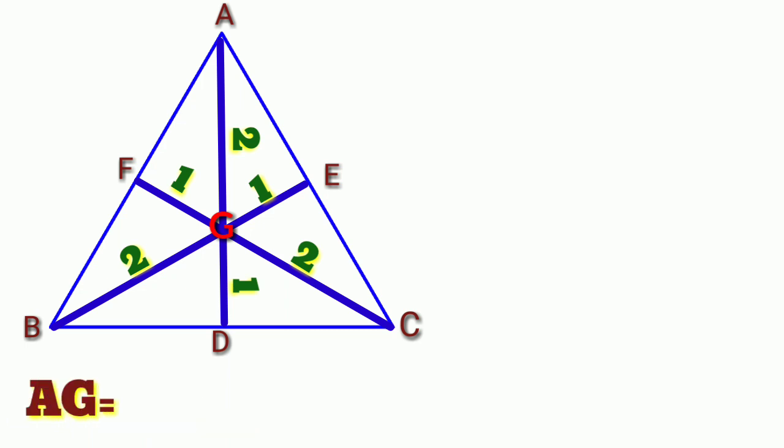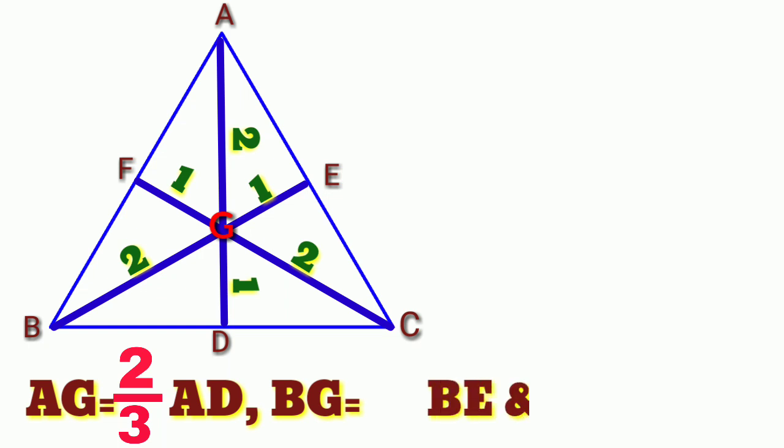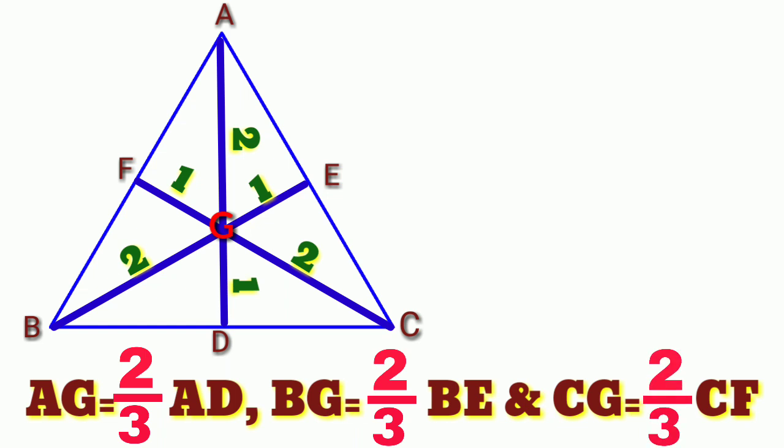we will know that AG is equal to 2/3 of AD, BG is equal to 2/3 of BE, CG is equal to 2/3 of CF.